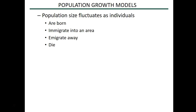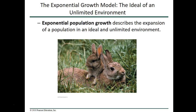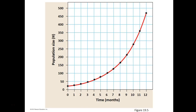Population ecologists use population growth models to predict changes in populations over time. Population size changes as individuals are born or die, come into an area, or move away. The first major growth model pattern is the exponential growth model — growth that happens in an unlimited environment. The iconic image for this is rabbits breeding exponentially, with numbers increasing from one generation to the next, following an exponential curve that looks like there's no end in sight.